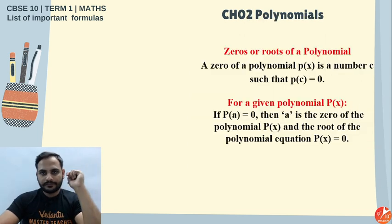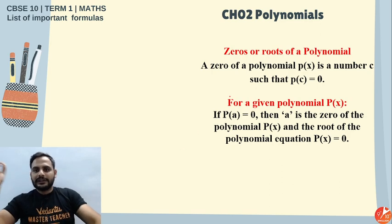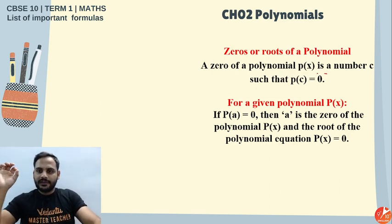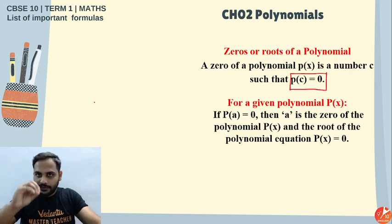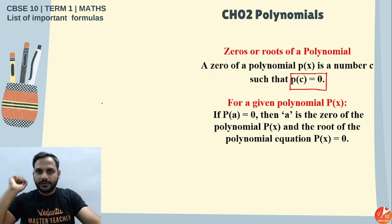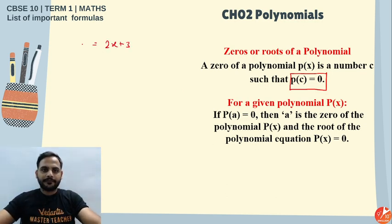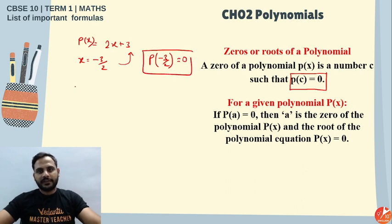Topic 2 — Polynomials. The zero of a polynomial means those values of x for which the value of the polynomial becomes equal to zero. For example, for polynomial 2x + 3, putting x = −3/2 gives zero. For a polynomial p(x), if p(a) = 0, then a is called the zero — also called the root — of the polynomial.